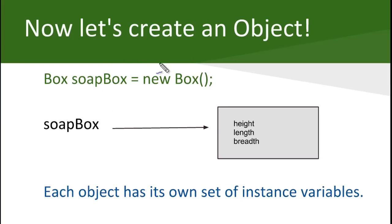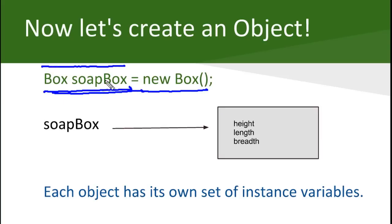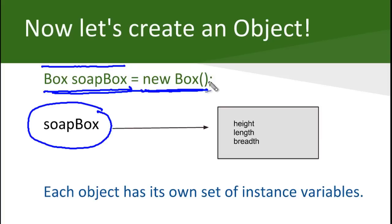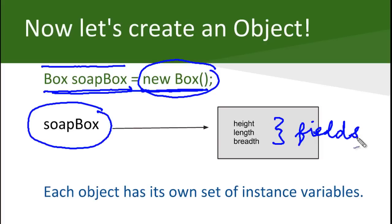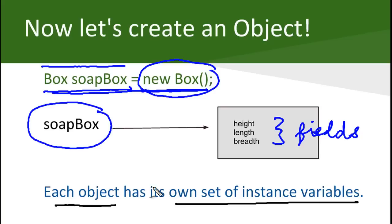What do we do to create an object? We write this code. When I write box soapbox, this part is creating a reference variable. And when I write new box — the class name with open-close parenthesis and a semicolon — this whole statement is creating an object with its set of fields or instance variables, and the reference variable soapbox is referring to this object. Each object will have its own set of instance variables. So now soapbox has its own height, length, and breadth. This is how we create the object using the new operator.